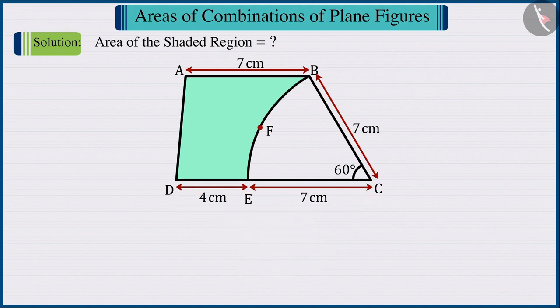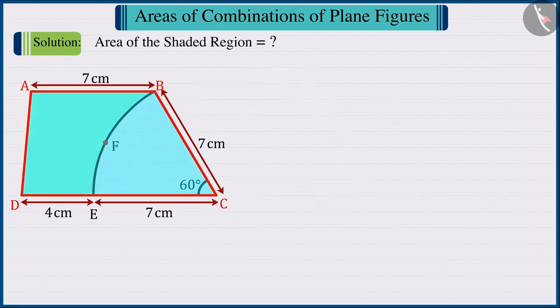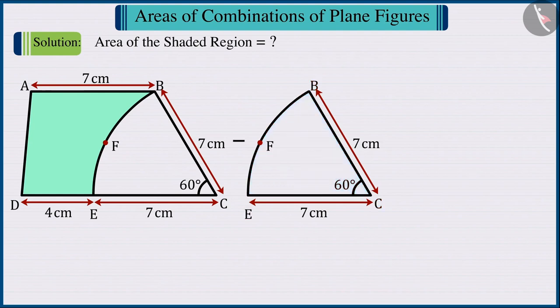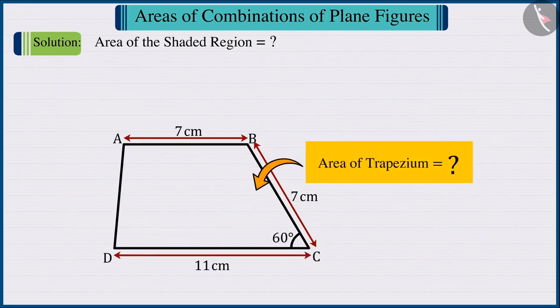Looking at the figure, we can say that the shaded region is obtained by subtracting the area of sector CBFE from the area of trapezium ABCD. Can you find the area of trapezium? Come on, let's see.